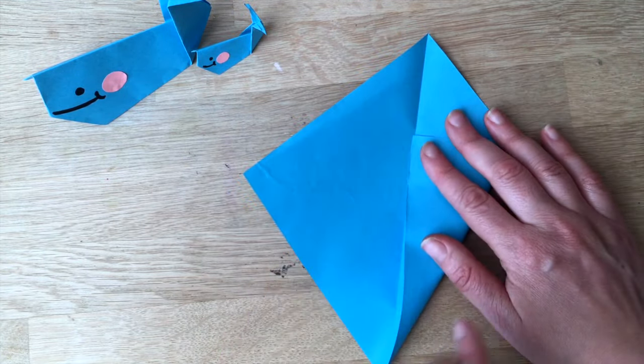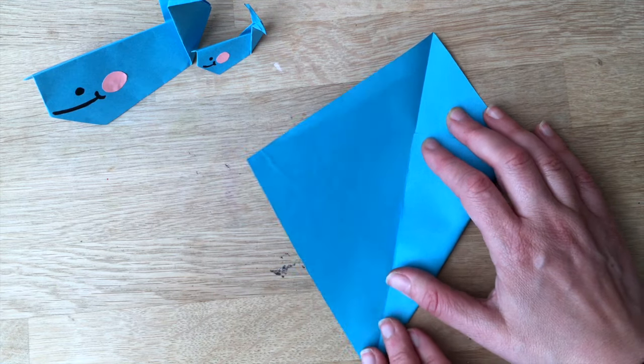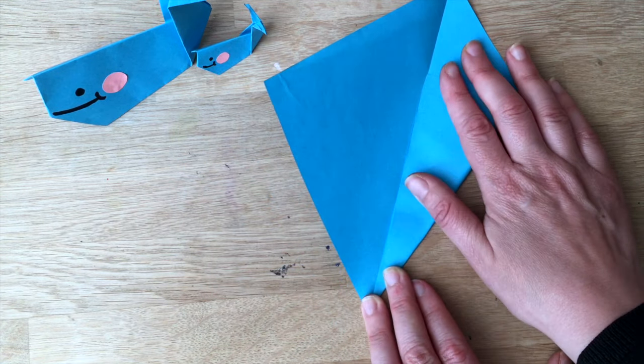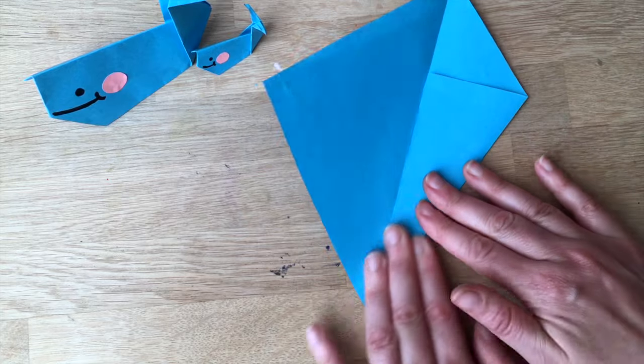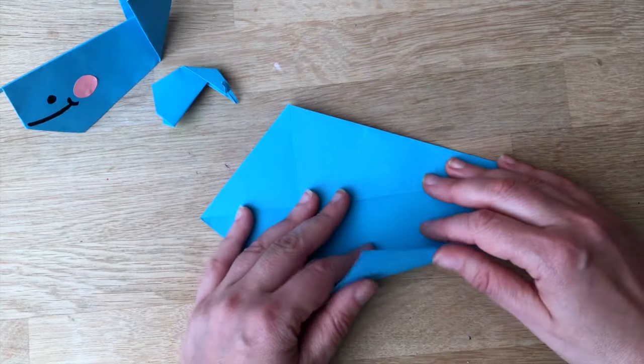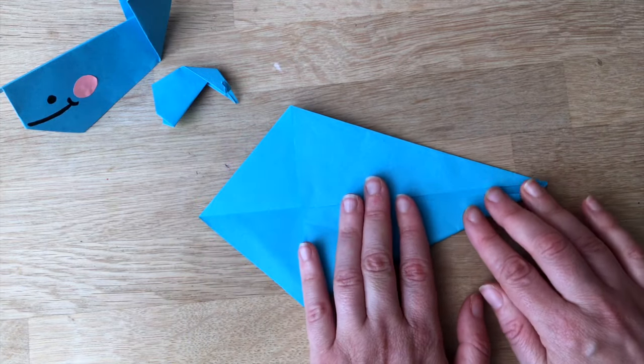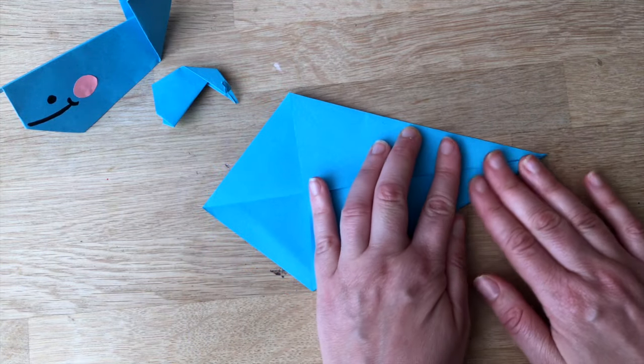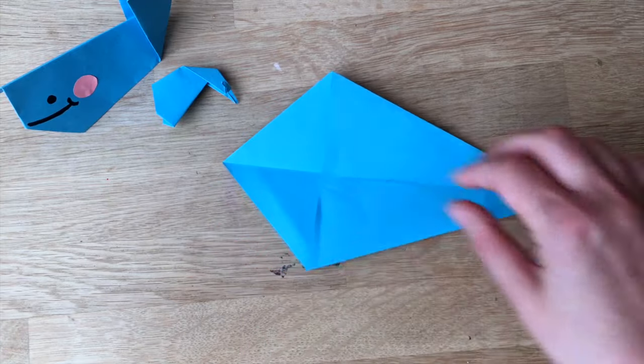At the top it's easy but the bottom gets a bit trickier, so you just need to be a bit more careful. Do it as neat as you can, nice neat crease. Turn it around and do the other side, so it looks a bit like a kite now.